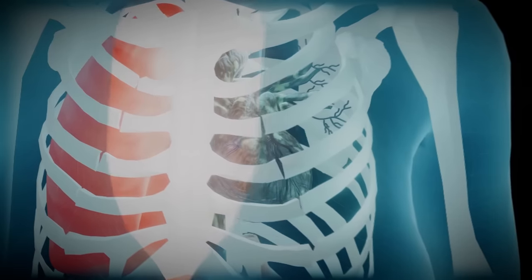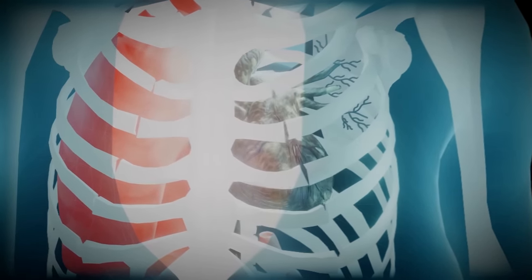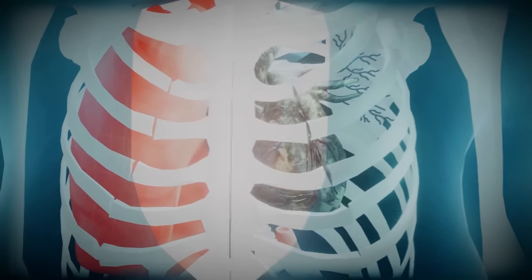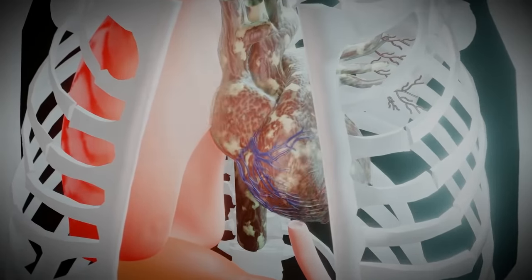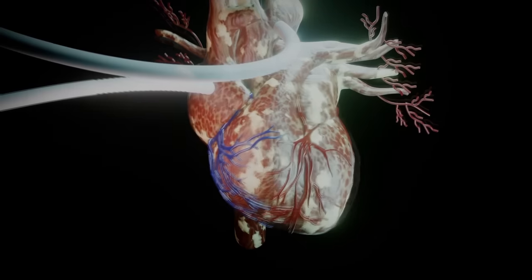the surgeon begins by making an incision in the skin over your breastbone. After that, they will separate the breastbone and move your rib cage to expose your heart. Throughout the procedure,